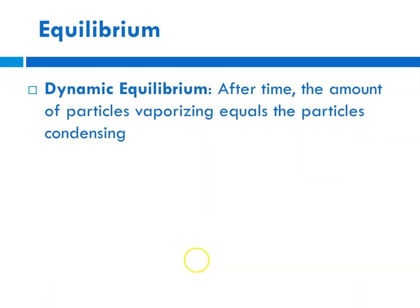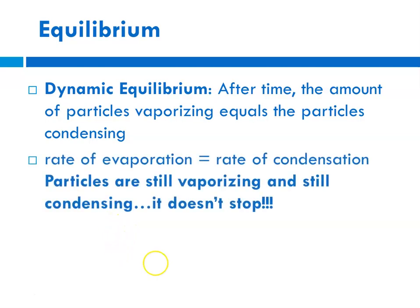A dynamic equilibrium is a situation where, after a certain amount of time, the number of particles vaporizing equals the number of particles condensing. The rate of evaporation inside the water bottle is equal to the rate of condensation. It looks like nothing's happening, but particles are still vaporizing and condensing — it's a dynamic process that doesn't stop.